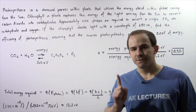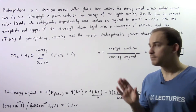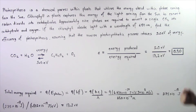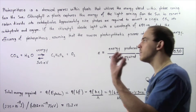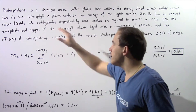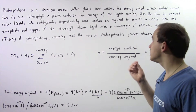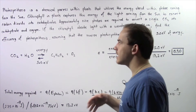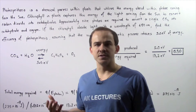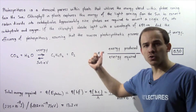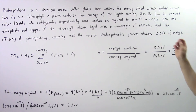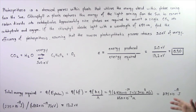Approximately nine photons are required by the chlorophyll to transform a single carbon dioxide molecule into carbohydrate and oxygen. If the chlorophyll absorbs light with a wavelength of 650 nanometers, find the efficiency of photosynthesis, assuming that the reverse photosynthetic process releases five electron volts of energy.